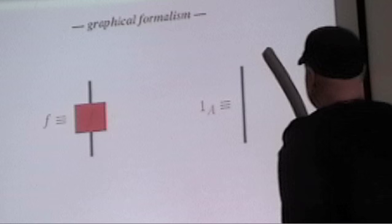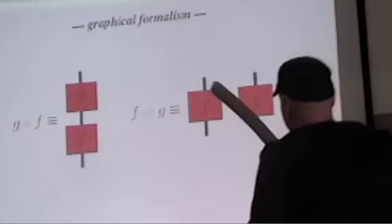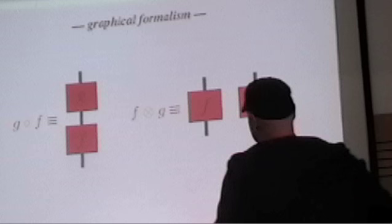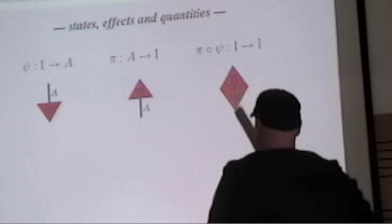So you can represent all this stuff graphically. Such a process becomes a box with an input and an output. If you see a line, it just means the identity process doing nothing. Doing one process after the other is just putting one here and the other one after it, and this is doing process F while doing process G. So it's very intuitive.